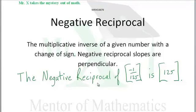The negative reciprocal of negative 1 over 125 is 125. The negative reciprocal of negative one-eighth is eight.